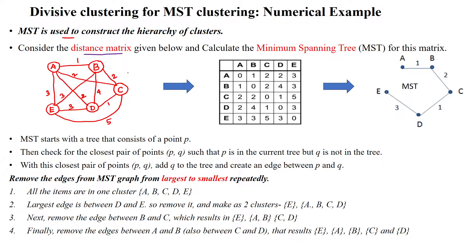We will calculate the distance matrix for the given graph. The distance from A to A is 0, A to B is 1, A to C is 2, A to D is 2, and A to E is 3. Like that we will construct the complete distance matrix.